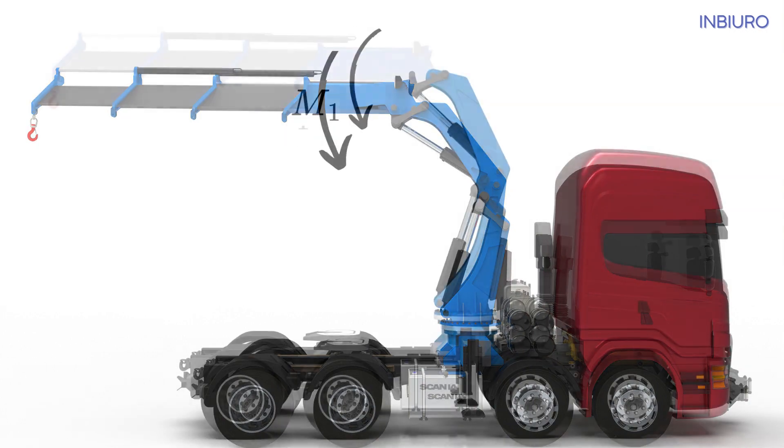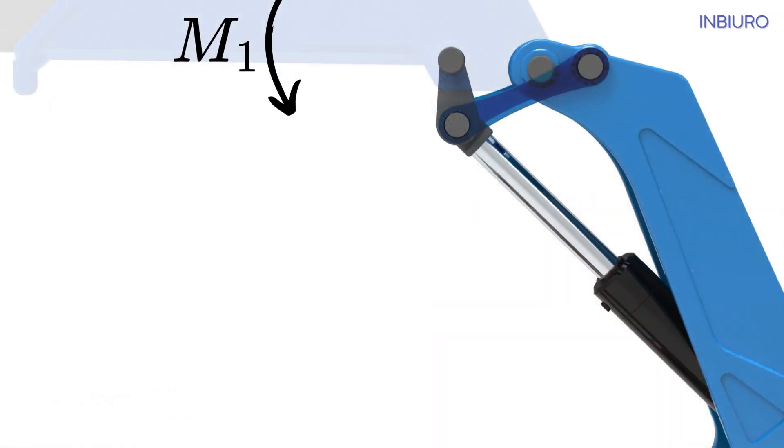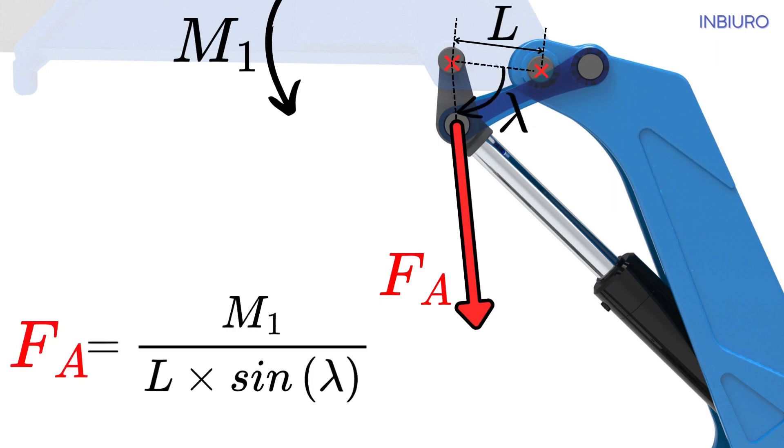Replace the weight of lifted load and boom's dead weight by corresponding moment M1. This moment causes a force in the link item, and the force can be calculated as the moment M1 divided by distance between pins, L, times sine of alpha angle between three pins.